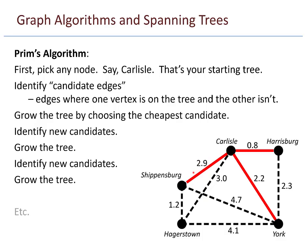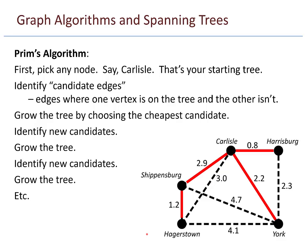We continue this process on and on. I identify candidates — three candidate edges — and the cheapest is the 1.2, so I grow that. At this point I've reached all the vertices, and I know that I have a spanning tree. Prim's algorithm guarantees that this is in fact a minimal spanning tree.